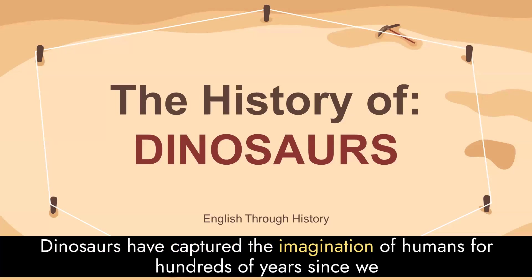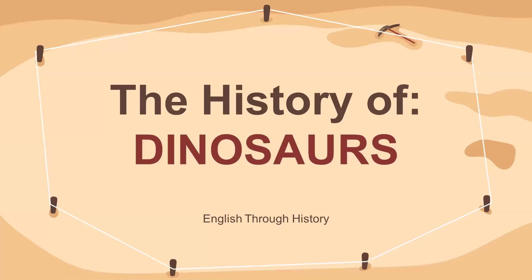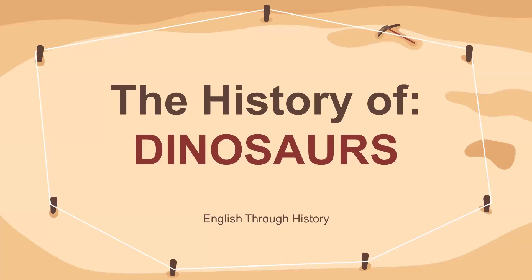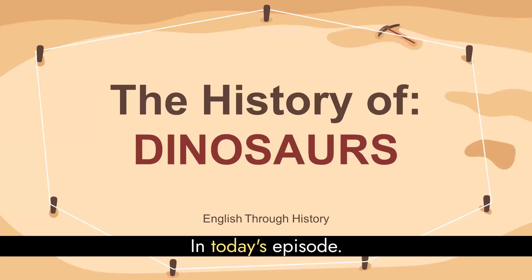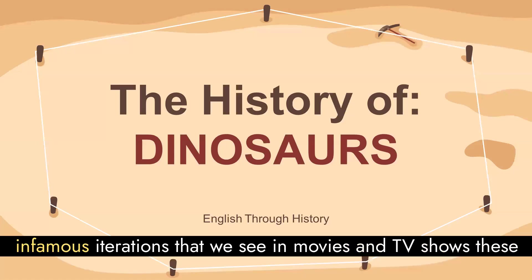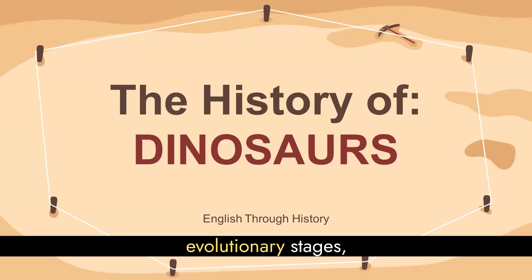Dinosaurs have captured the imagination of humans for hundreds of years, since we first became aware of a race of animals that preceded our own. And in fact, had they not suffered an extinction event, they would probably have prevented our evolutionary arc. In today's episode, we will be looking at the history of the dinosaurs, from their early forms to the infamous iterations that we see in movies and TV shows. These fascinating creatures were around for a very long time and went through several evolutionary stages.